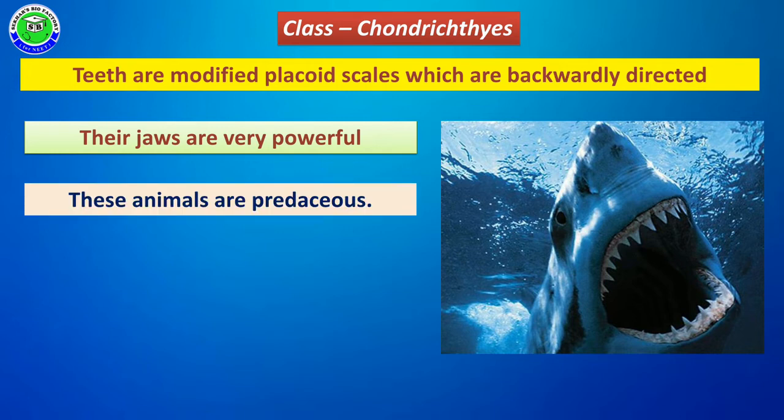These jaws are very powerful in Chondrichthyes members. Because of this powerful jaw with sharp teeth directed backward, they can capture other animals as predators.